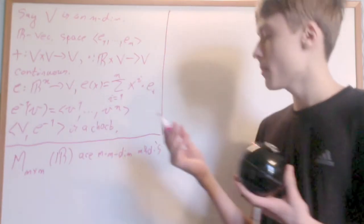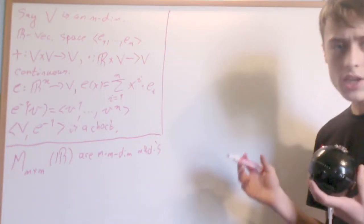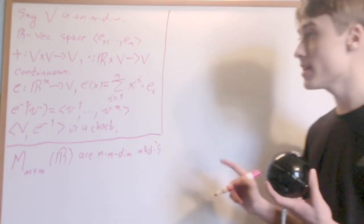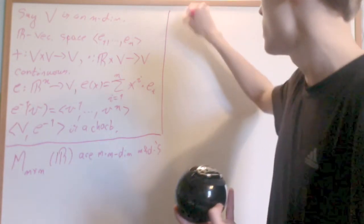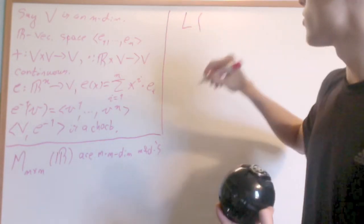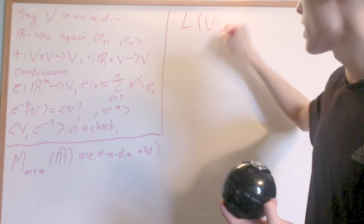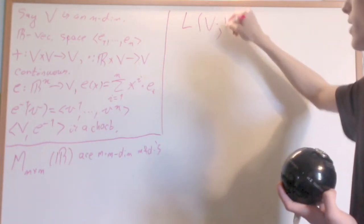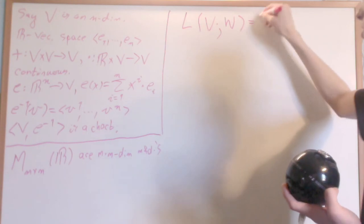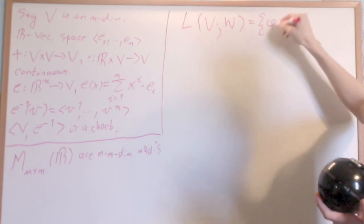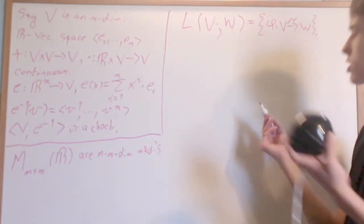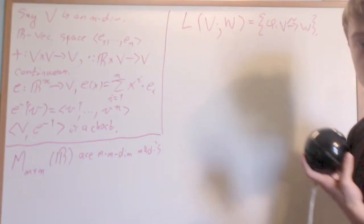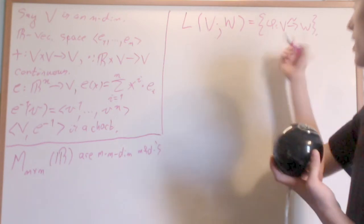Now what I'm going to do is prove that the linear functions between any two real vector spaces is also a manifold. So I have the set of linear maps between V, a finite dimensional real vector space, and W. This is the set of phi from V to W that is linear.